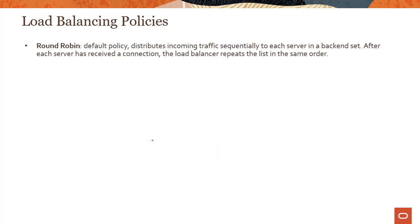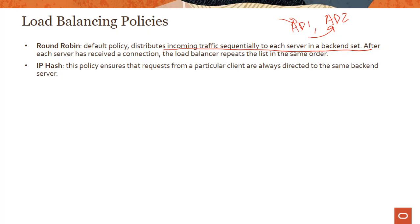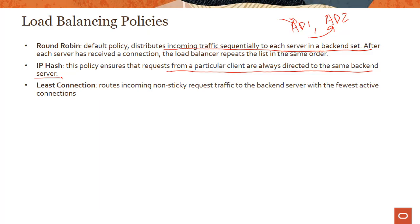What are the load balancing policies? Round robin is the default policy — it distributes incoming traffic sequentially to each server in a backend set in a round robin fashion. IP hash ensures requests from a particular client are always directed to the same backend server — so a given client's requests always go to one specific backend. Least connection means the load balancer routes incoming non-sticky traffic to the backend server with the fewest active connections, sending traffic to whichever server has the least load.